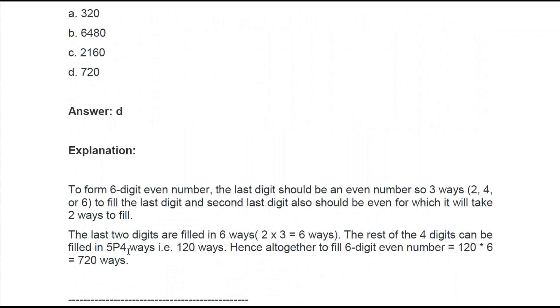The explanation: to form the six-digit even number, the last digit should be an even number, so three ways: 2, 4, or 6. The second last digit also should be even, for which it will take two ways. So the last two digits are filled in 6 ways (2 × 3 = 6).